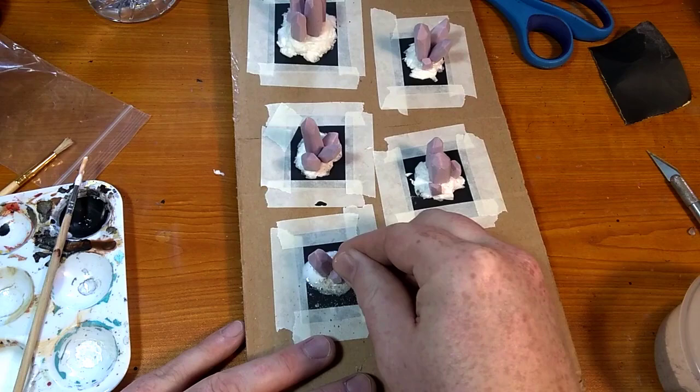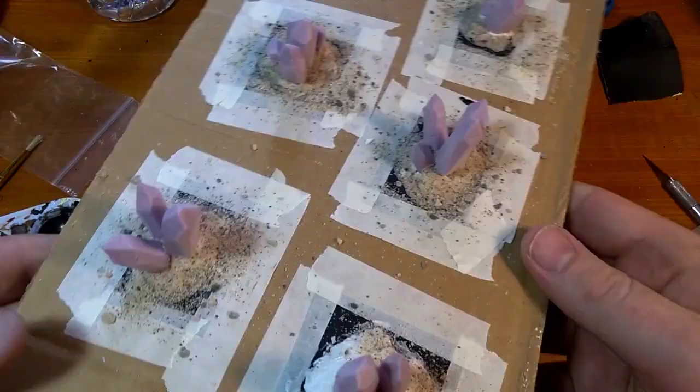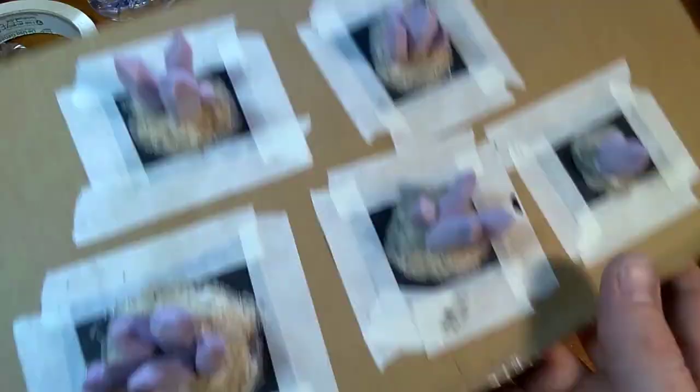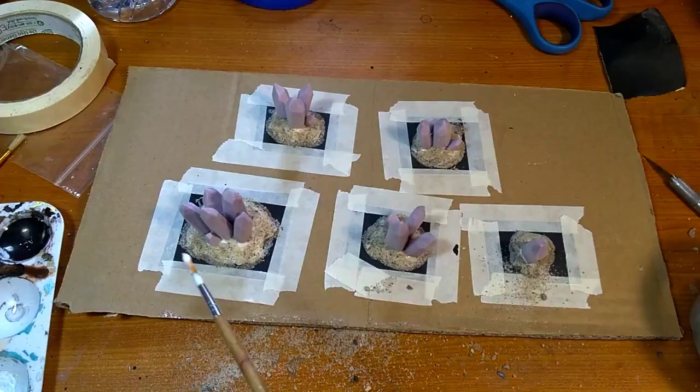Then I take my play sand and I sprinkle it over the glue. I do this on all the bases. After the glue dries for a little bit I shake off the loose sand. There were some spots I wanted to build up so I decided to do some touching up on the bases until I was happy with the results.